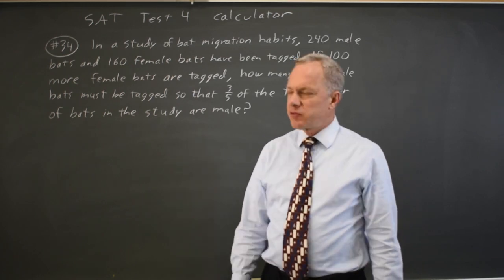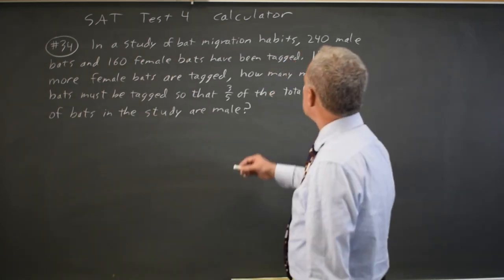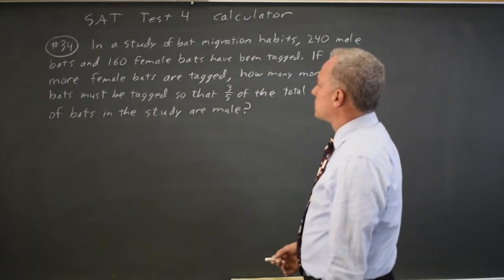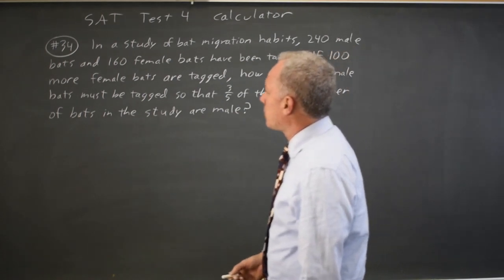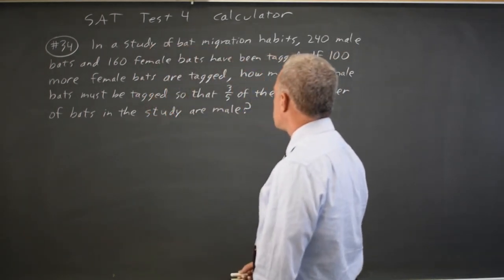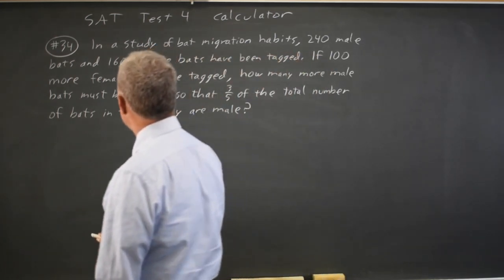This is calculator question number 34. College Board describes a study in which we already have 240 male and 160 female bats, and we add 100 more female bats. And the question is how many more male bats so that three-fifths of the total are male?